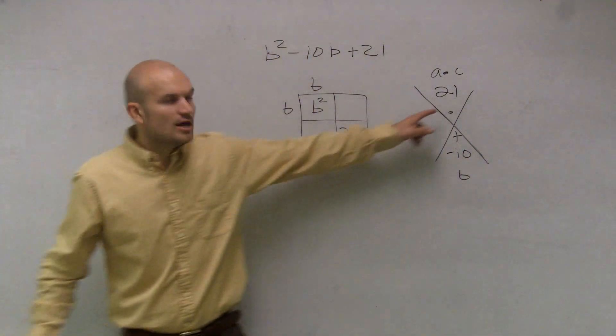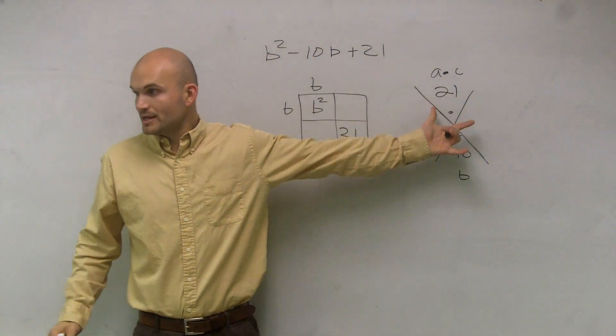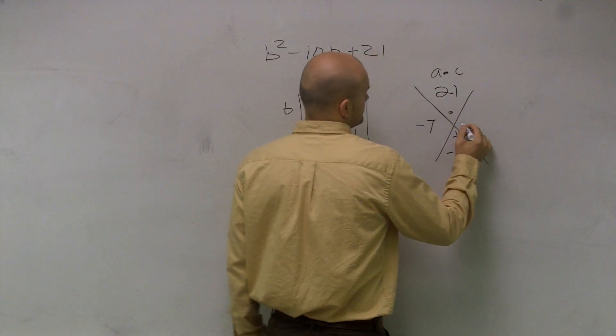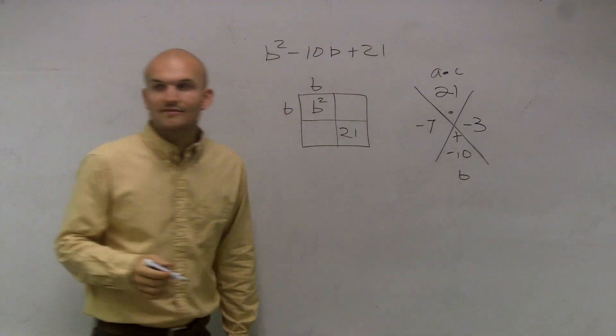So now I've got to say, what two numbers, what are my factors of 21 that multiply to give me 21 but add to give me negative 10? Negative 7 and negative 3. So I have negative 7 and negative 3.